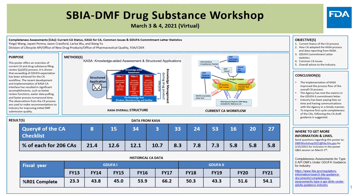We will also cover common issues and GDUFA commitment letter statistics. The recent development and implementation of CASA interface for CA has resulted in significant accomplishments such as better review functions, easier data pulling, and faster process turnaround time. The CA data gathered over the last eight years will be used to show the performance of the GDUFA commitments, and observations over the last years will be used to provide recommendations to the industry to improve the overall CA process.